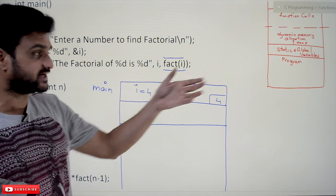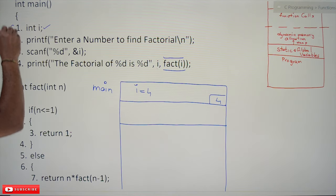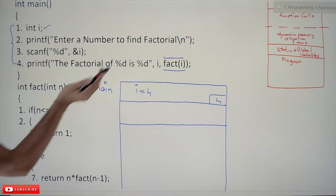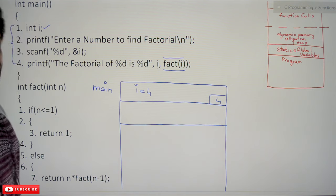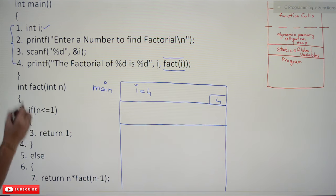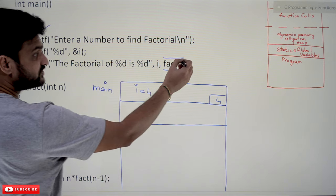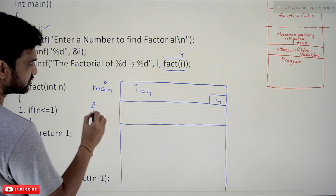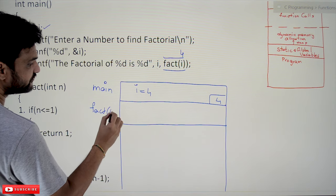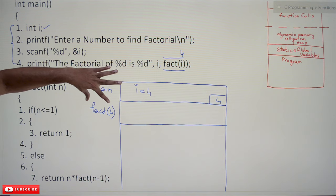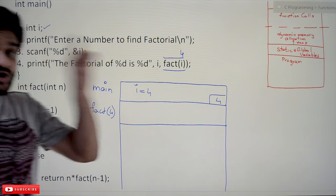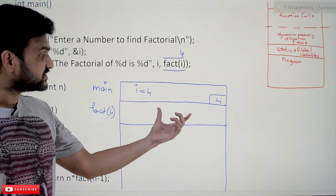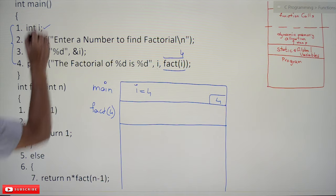Here is where we call it the instruction pointer — we remember from where execution has to resume. At line 4 we stopped the sequence of execution and jumped to another place, which is the fact function, with the value of i equal to 4. So the function call is fact(4). For every function call, a new activation record will get created, and now we are here in this function.